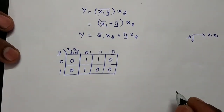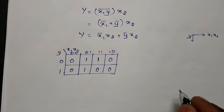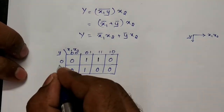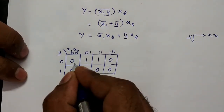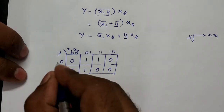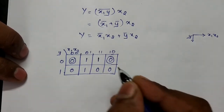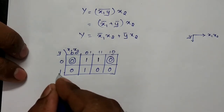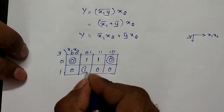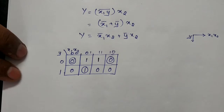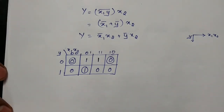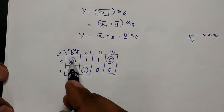Now we identify stable states, where the present state and next state are equal. For present state 0, we mark the stable state where next state is also 0. For present state 1, we mark the stable state where next state is also 1.